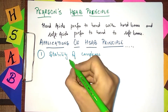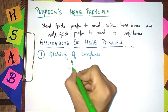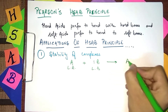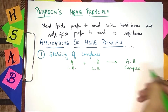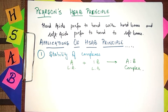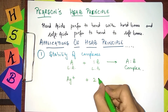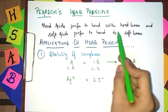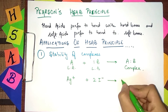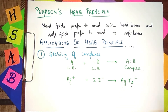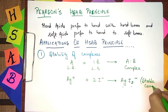Generally, a complex forms when a Lewis acid combines with a Lewis base to give a stable complex. Now, if a soft acid — for example, Ag⁺ — combines with a soft base, we get a soft complex, which will be a stable complex. In complex formation, Pearson's principle is followed for a stable complex — two soft or two hard ones combine.